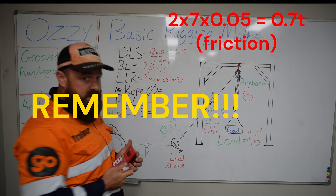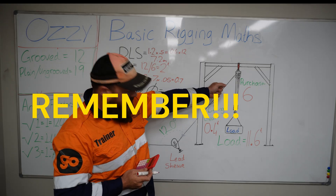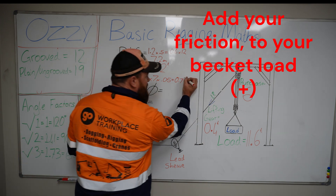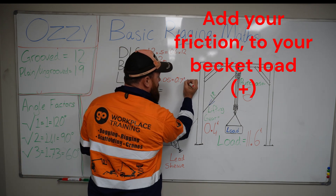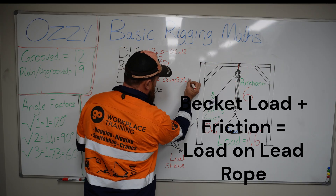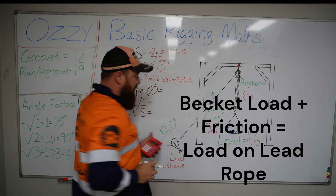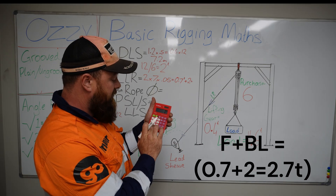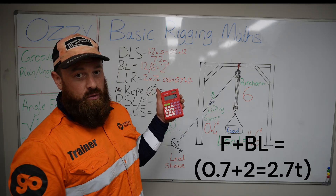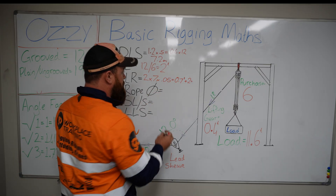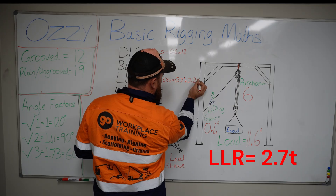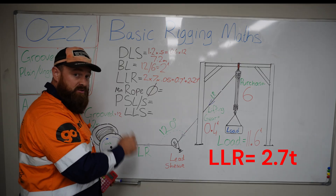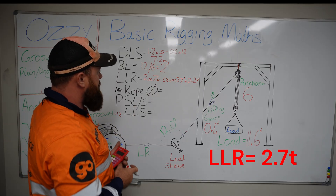We also need to take into account that we automatically have 2 tonnes pulling down on that as well. So we have 0.7 tonnes of friction plus the 2 tonnes we are pulling, giving us 2.7 tonnes. The load in the lead rope — the load that the winch needs to be able to pull — is 2.7 tonnes.